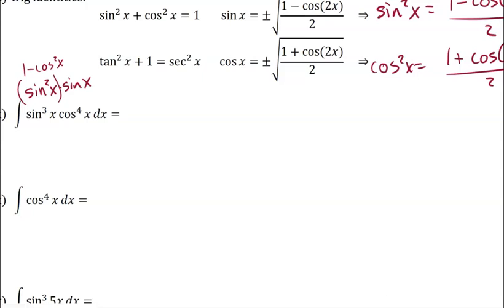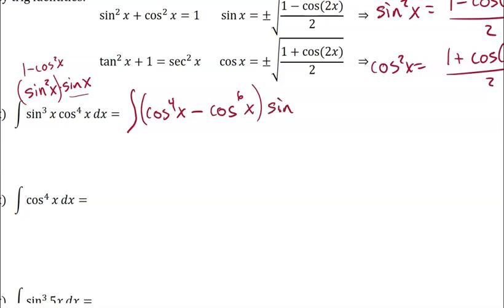So when I replace sine cubed, I'm going to replace it with 1 minus cosine squared times sine. Now the 1 minus cosine squared, I'm going to distribute that to the cosine to the fourth. So I end up with cosine to the fourth x minus cosine squared times cosine to the fourth, so cosine to the sixth x. And then all of that is multiplied by this remaining sine x, and then I have dx. So all I've done is use the Pythagorean identity and factored out a sine x to change it to this.